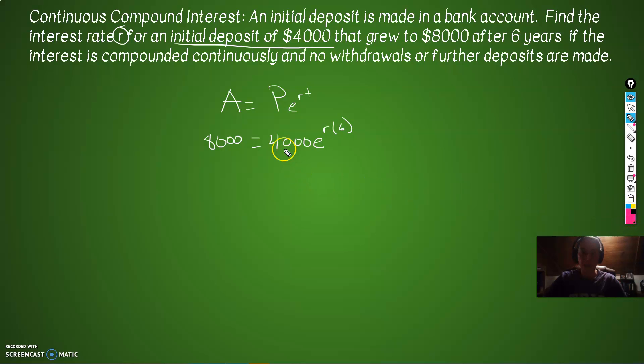First thing we do, get rid of the clutter with all the stuff next to E. So divide out by 4,000. 8,000 divided by 4,000 we'll get a 2 on the left. These guys will cancel out. We'll get E to the 6R on the right.